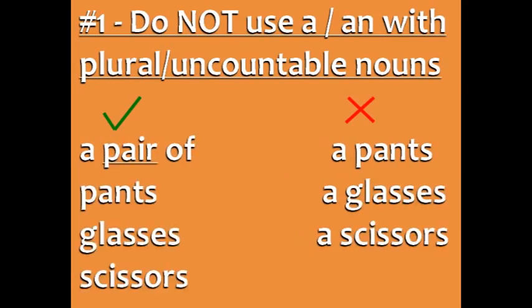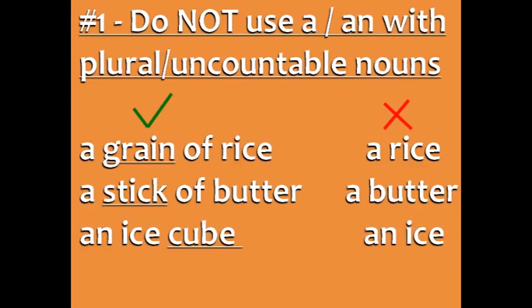Don't say 'a pants,' 'a glasses,' or 'a scissors.' You need to say 'a pair of pants,' 'a pair of glasses,' and 'a pair of scissors.' Rice, butter, and ice are also uncountable, so you can't use the word a, but you can say 'a grain of rice,' 'a stick of butter,' and 'an ice cube.'